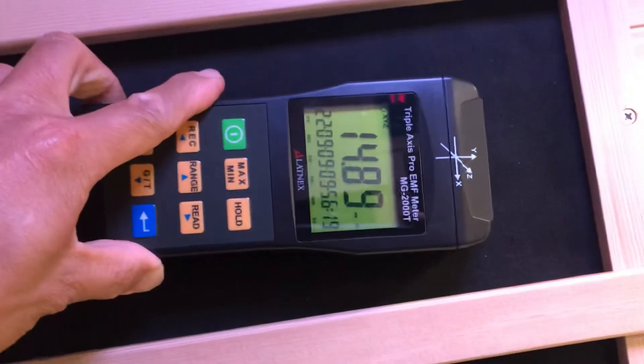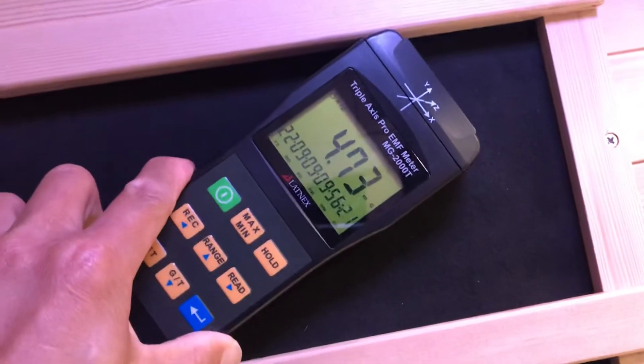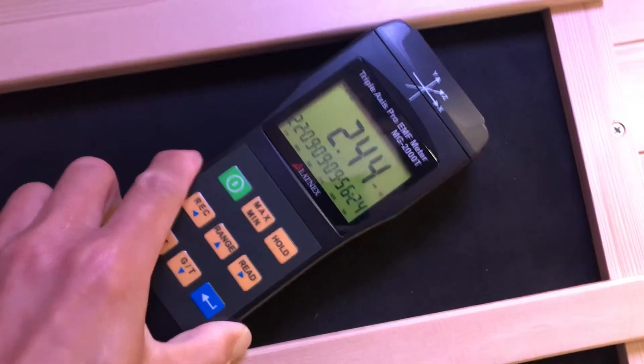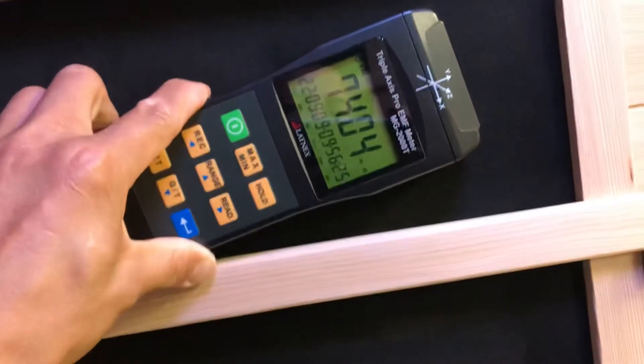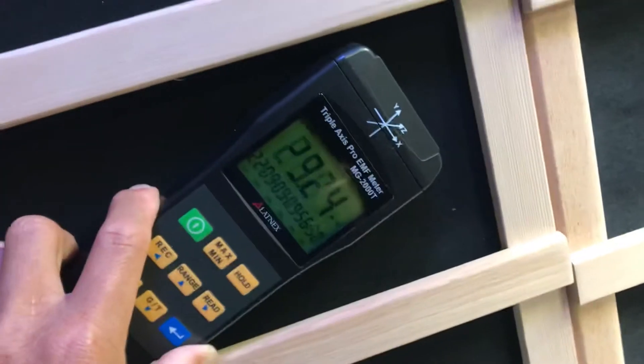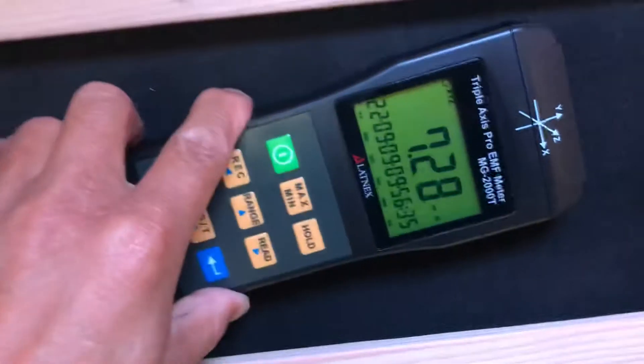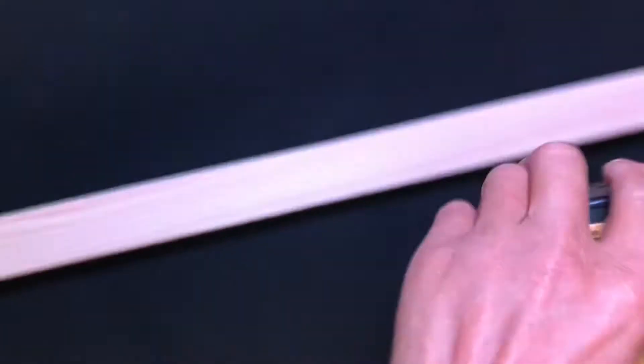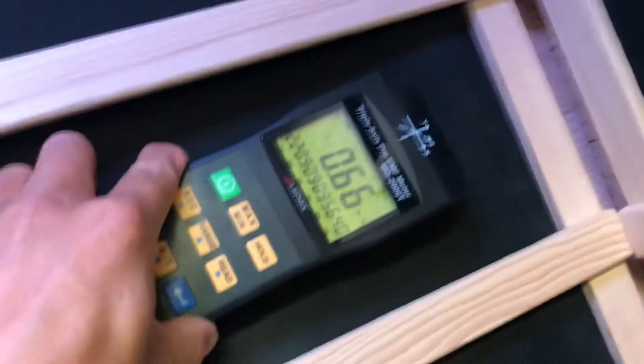So again, this is zero distance testing. And this is 14, 2-point-something. This is 76. This is 42. This is 7. This is zero.